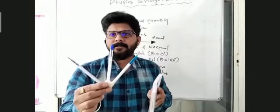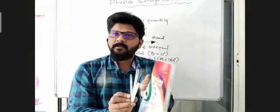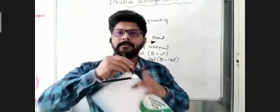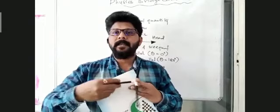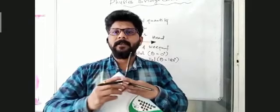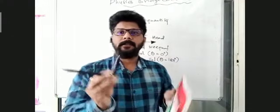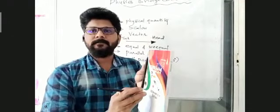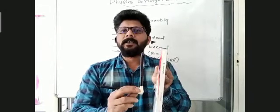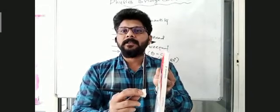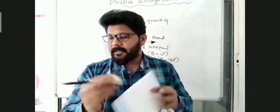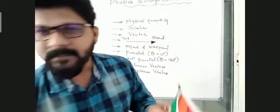Three vectors placed like this are two-dimensional only. Now I will take a three-dimensional arrangement. In this three-dimensional arrangement, 2 vectors are in the plane, but 1 is not in the plane. So only 2 vectors are in the plane. But in this case, 3 vectors are in the plane.